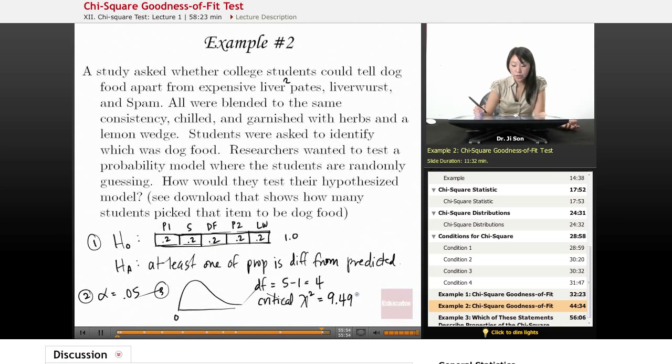All right. So it seems that students are not randomly guessing. They actually have a preference for something as being dog food. My guess is liverwurst. I don't even know what that is.